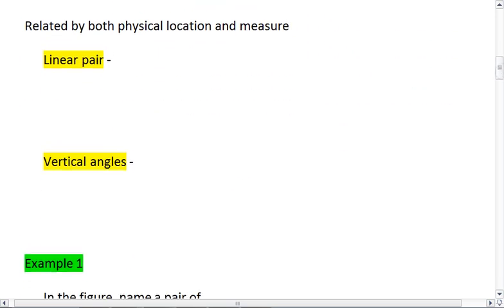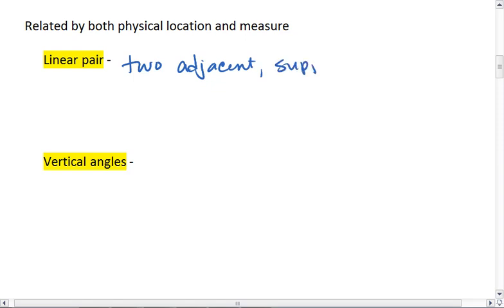Lastly, you have angles that are related both by physical location and measure. A linear pair are two adjacent supplementary angles.